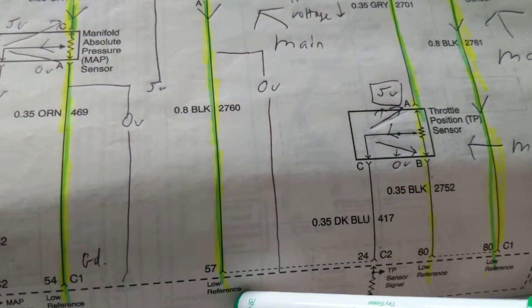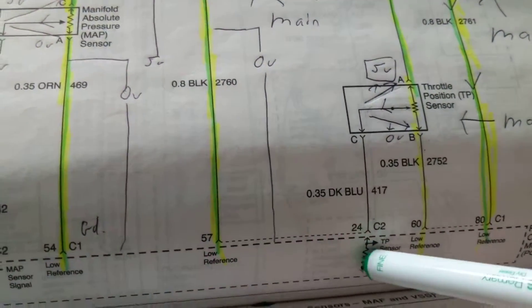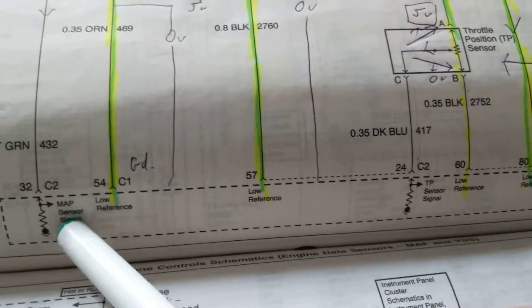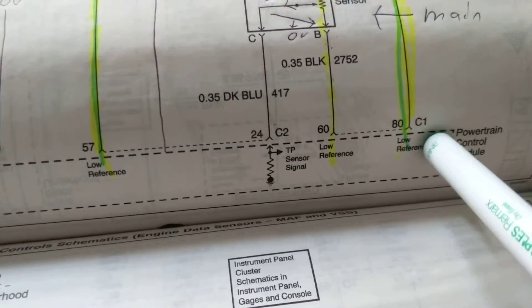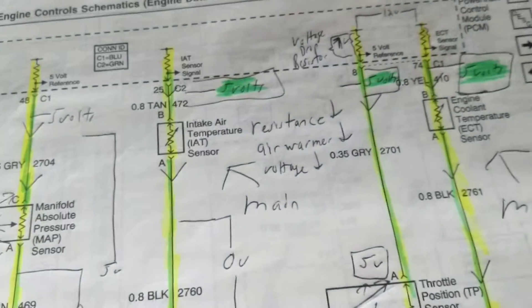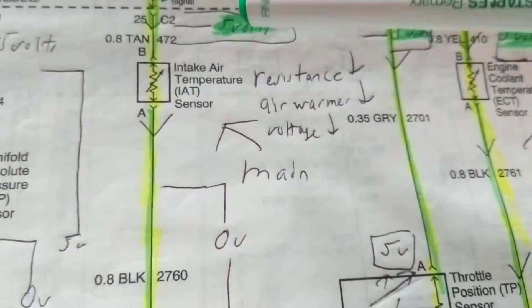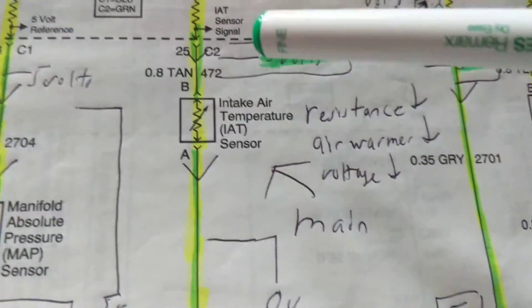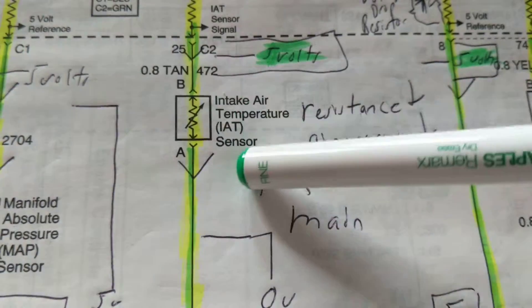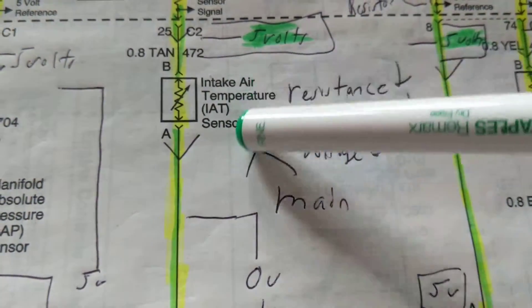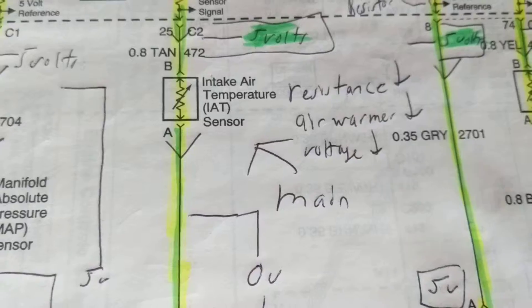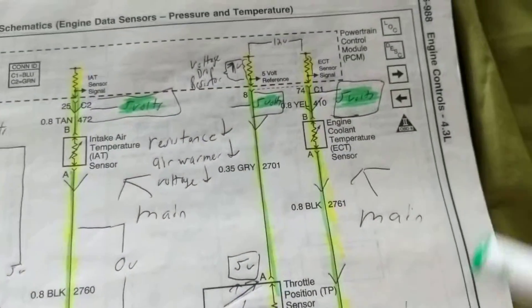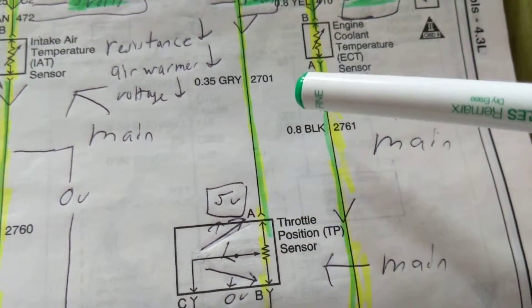Of course the other side goes to low reference, which is a ground given by the PCM - not actual chassis ground or metal ground, but it's given by the PCM. And this dotted line over here means this is another part of the PCM - you can have 200 pins of the PCM. So we know the air temperature by measuring voltage. If you put a scanner on it, you'll see how much the signal is for the temperature of the air - colder air, hotter air.